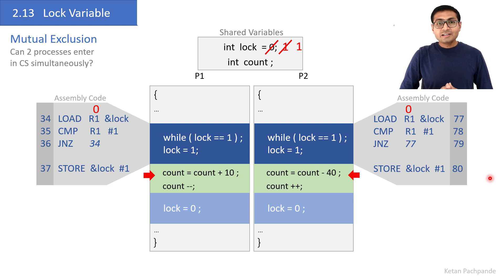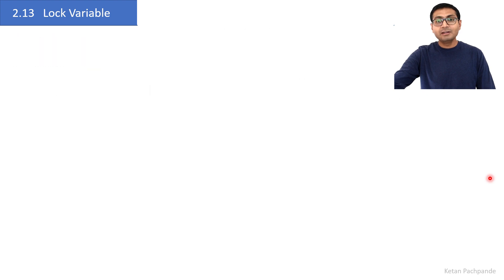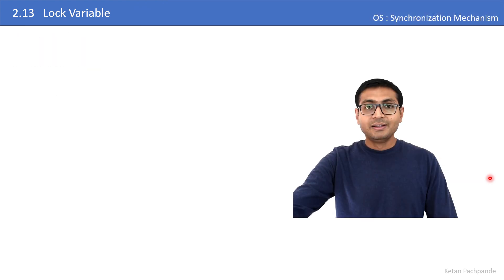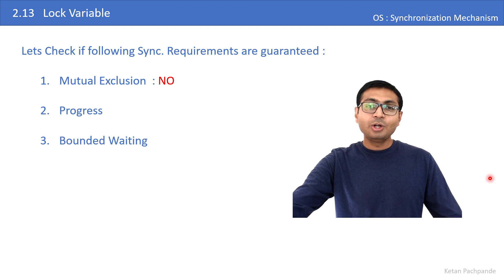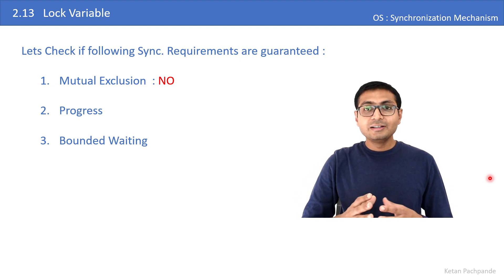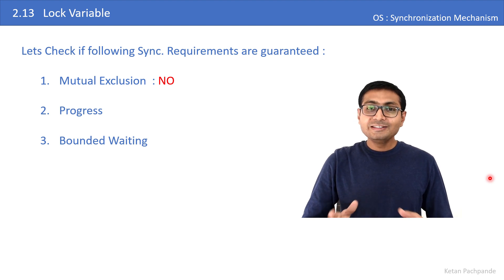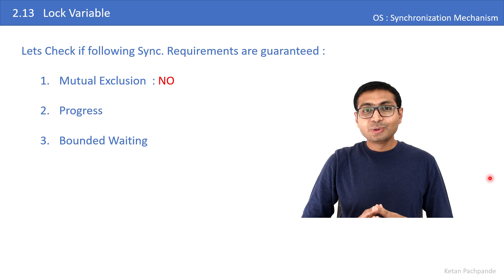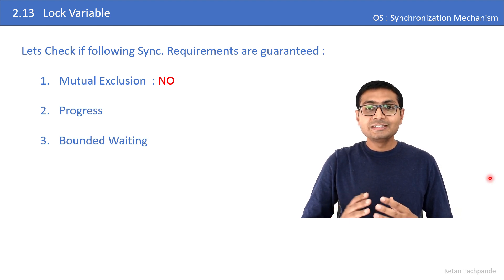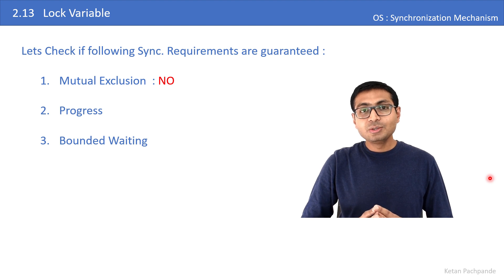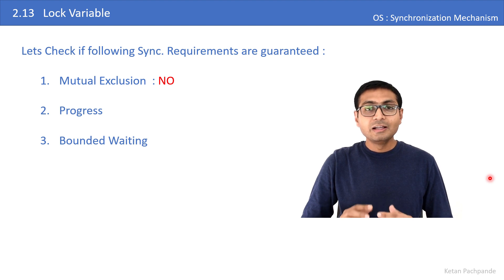This sequence of execution proves that both processes are able to enter the critical section simultaneously. Therefore mutual exclusion is NOT guaranteed by the lock variable mechanism. Since the first requirement itself fails, the lock variable is not a good synchronization mechanism. The purpose of studying it is to understand the problems with this simple user-level solution.